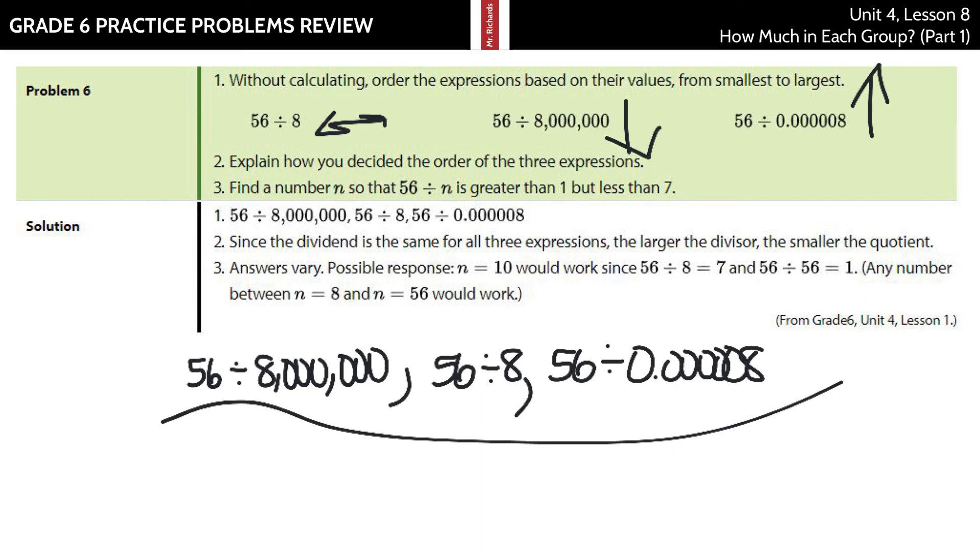Find a number so that n, it's for n, so that 56 divided by n is greater than 1 but less than 7. Well, they picked 10 and they showed you that, you know, 56 divided by 8 is 7. 56 divided by 56 is 1. So if you're looking for greater than 1 or less than 7, really, you're looking for any number between 8 and 56 will work for n.